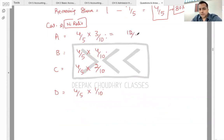Jo bacha tha four by five, to four threes are 12 by 50, four fours are 16 by 50, four twos are 8 by 50, four ones are 4 by 50.